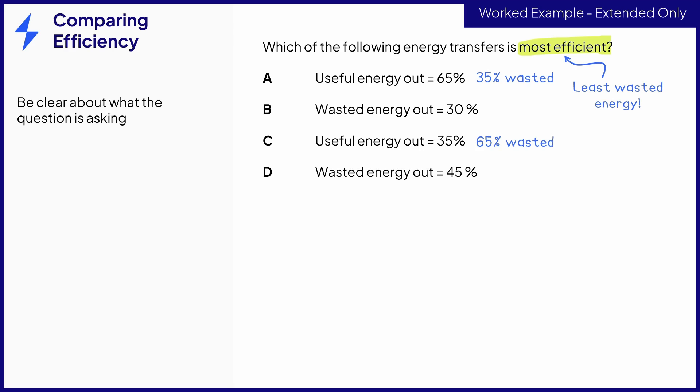Now we can easily compare all the values of wasted energy. So for A, 35% is wasted. For B, 30% is wasted. For C, 65% is wasted. And for D, 45% is wasted. So the energy transfer with the least amount of wasted energy is 30%, which is B for one mark. Remember that you're free to annotate your exam paper in any way that you might find helpful.